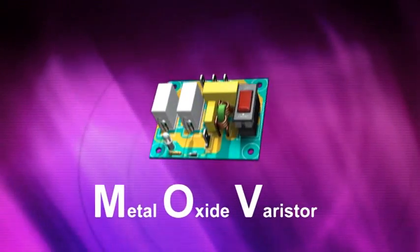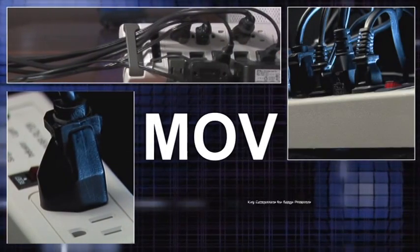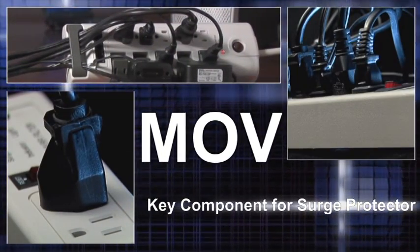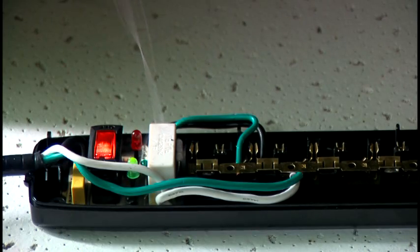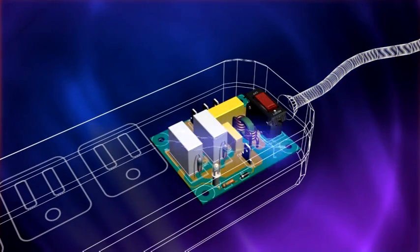MOVs, also known as metal oxide varistors, are the most common component used in surge protection. The MOV only activates during a voltage spike and acts as a sponge which absorbs the excess voltage.